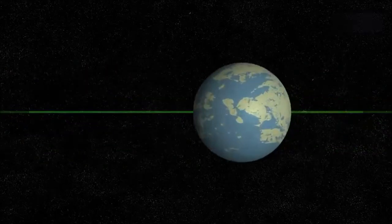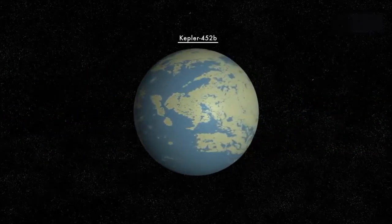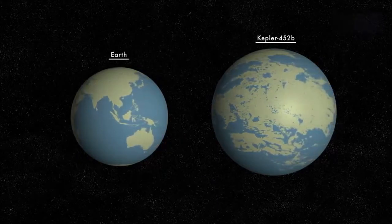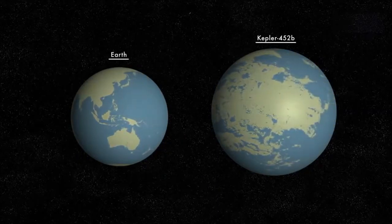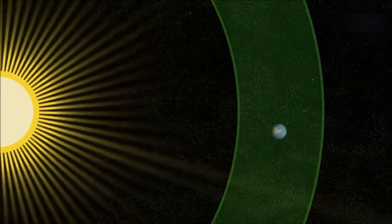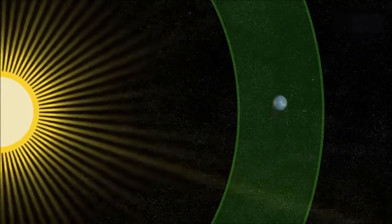Among those dozen, Kepler-452b fires the imagination most because it is the closest analog to the Earth-Sun system discovered to date. A planet only a little over one and a half times the diameter of Earth, orbiting within the habitable zone of a star very much like our own Sun.